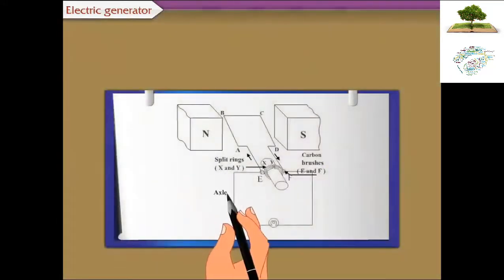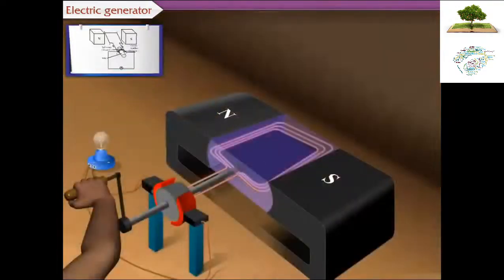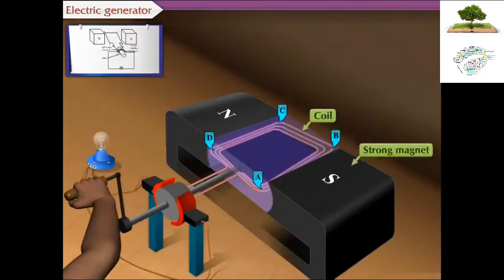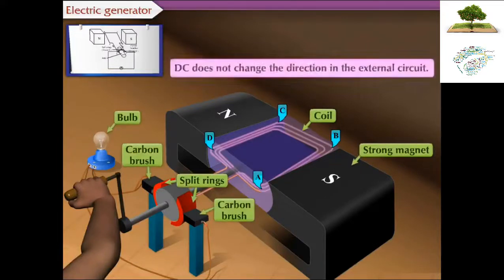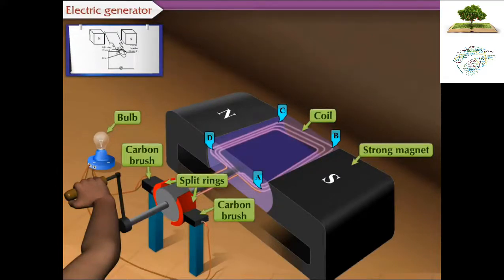Let us first draw the diagram of DC generator. The main components of DC generator are a copper coil ABCD, strong magnets, split rings, carbon brushes and bulb. DC does not change direction in the external circuit. To achieve this, a split ring is fixed on the axle like the split ring shown in case of an electric motor.